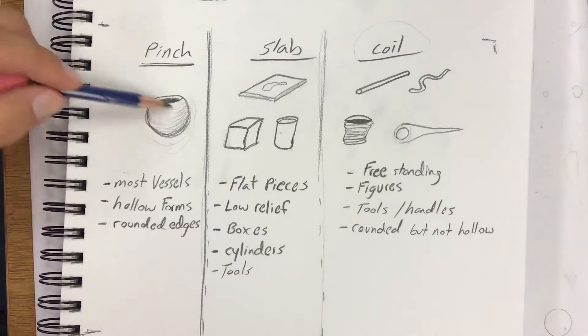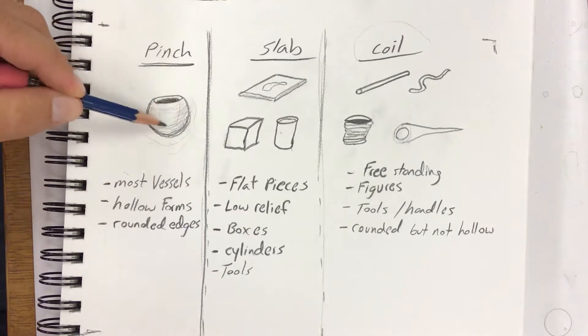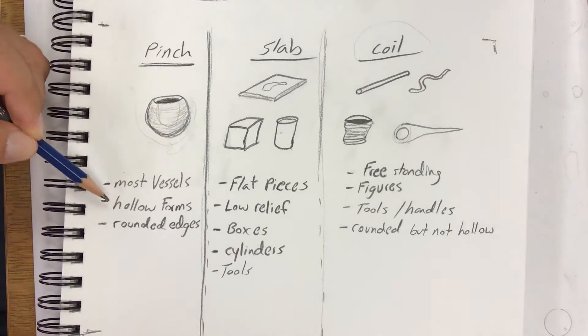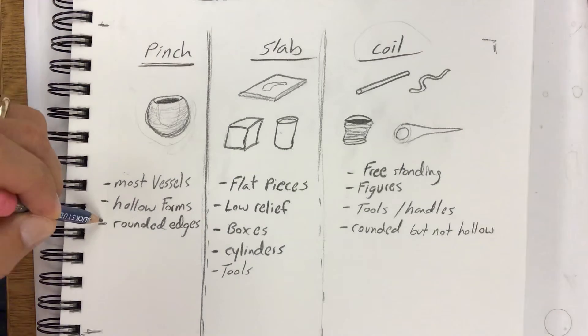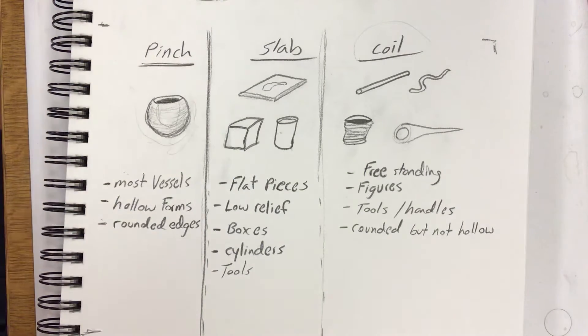Hollow forms have this big empty space here in the middle of this pinch pot, so anything that is a hollow form would be more for a pinch, and with rounded edges that bottom edge would be better off for the pinch.